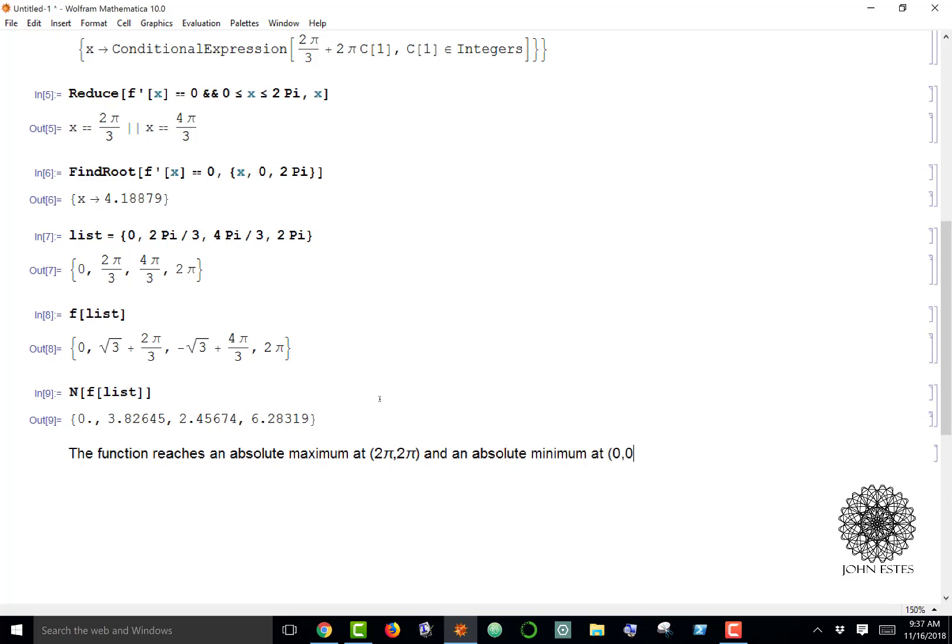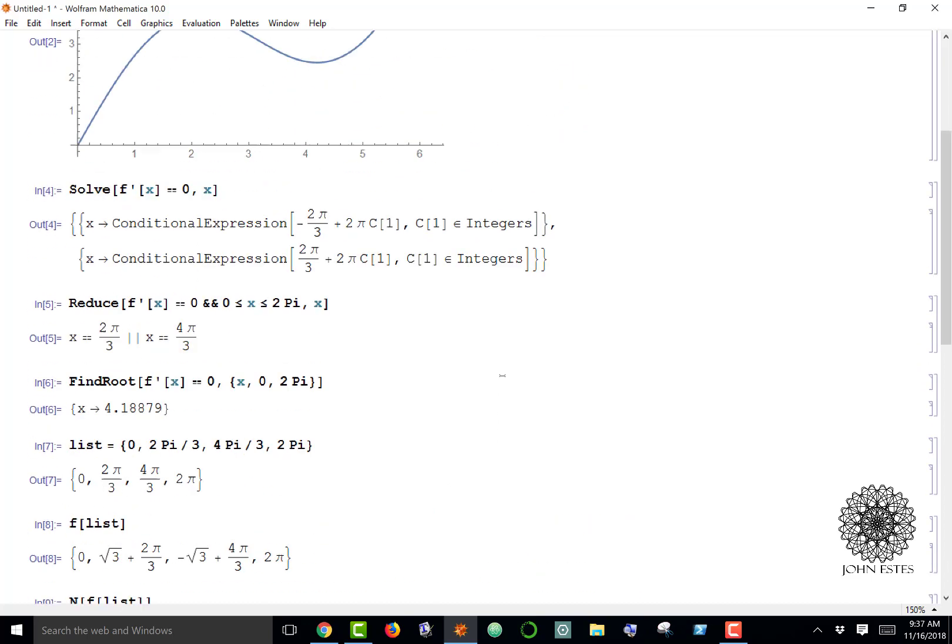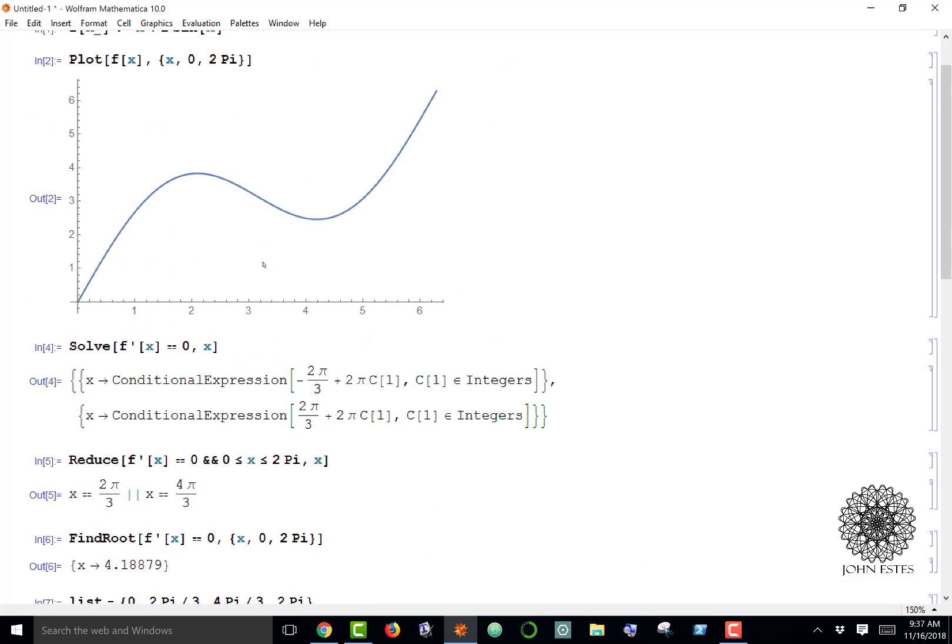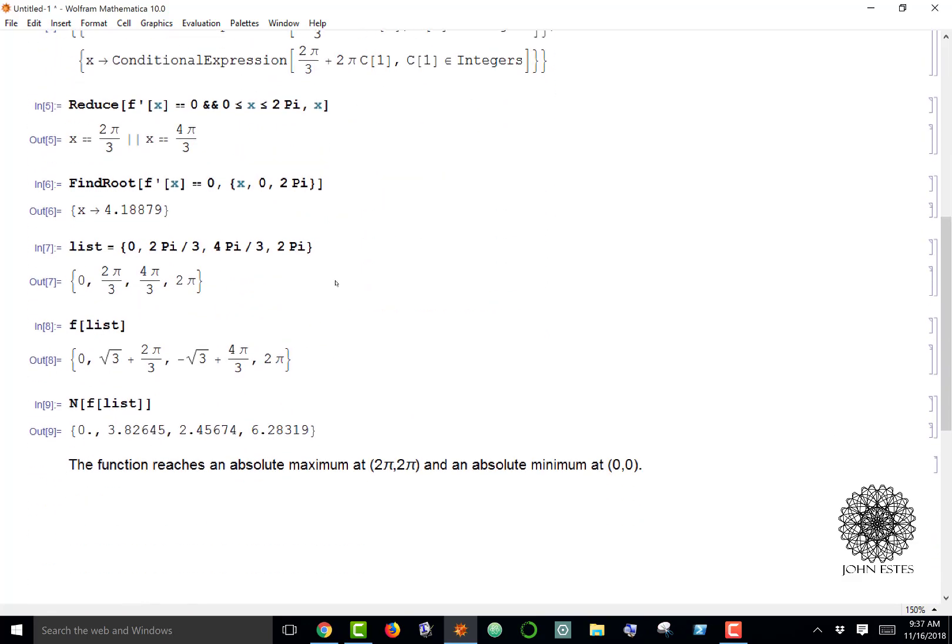And an absolute min at (0, 0). Again, all you have to do is solve the derivative for 0, test those points along with your endpoints, and just see which one's the highest and the lowest.